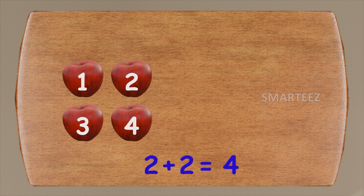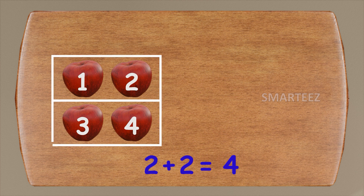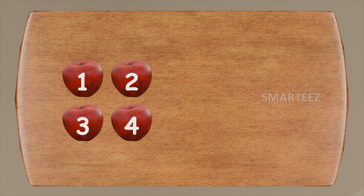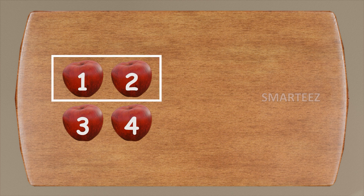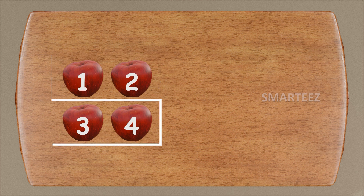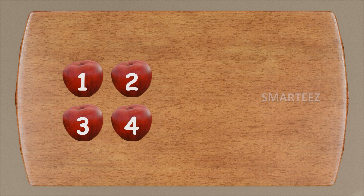We already know if we add two and two, we get four. We can say we had two times two apples. Take a look here on the table. First, we had two apples — that's one set of two apples. Then we had two more apples. That's the second set of two apples.